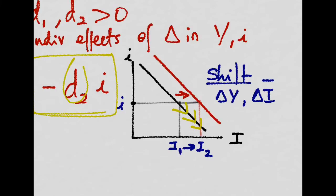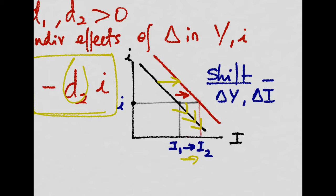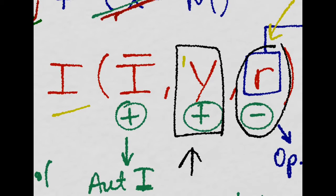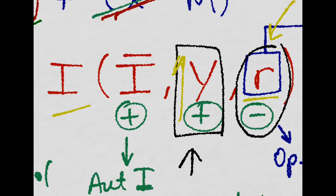And when we increase output, we shift this function to the right, and we increase investment. So remember, investment depends positively on income output and negatively on the real interest rate of bonds.